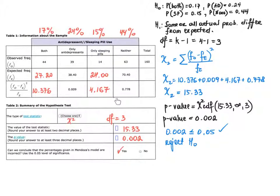When I add all values in the last row, I get 15.33 rounded to two decimal places. Adding all observed frequencies gives 160, and the total for expected frequencies should also be 160. The sum of (Fo − Fe)²/Fe values is 15.333 in the thousandths place, but we will round to two decimal places as requested in Table 2.